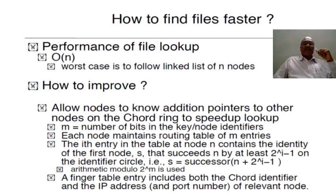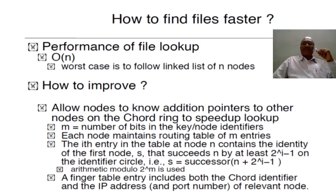One technique used to reduce message count is to allow nodes to know additional pointers to other nodes on the circular ring to speed up the lookup — instead of sending messages only to immediate successors, you can skip some of them. In this hashing technique applied to the distributed hash table, a small value m denotes the number of bits in the key or node identifier. Each node maintains a routing table of m entries.